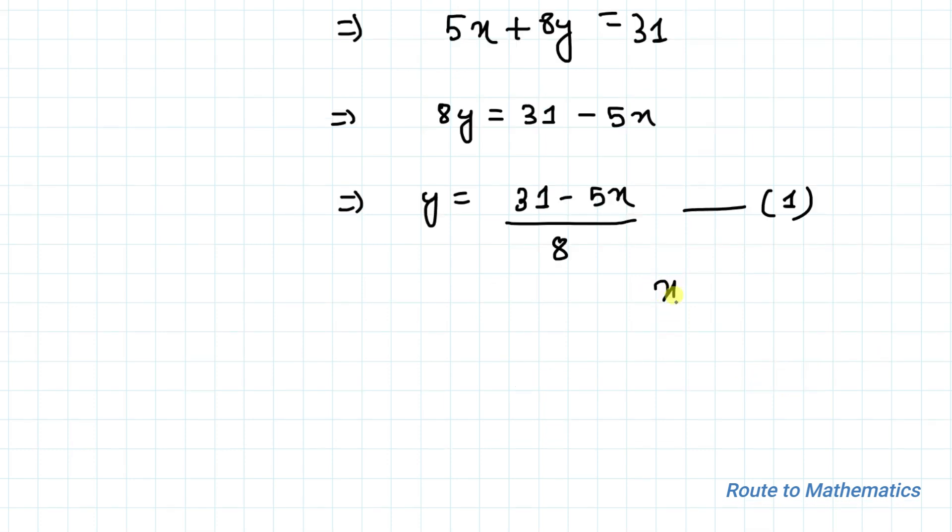By observing equation 1, we have to choose the value of x such that 31 - 5x is divisible by 8, so that we get y as a positive integer. In order to satisfy equation 1, the value of x can neither be 0 nor 1 nor 2, because for these values of x, the value of 31 - 5x doesn't get divisible by 8.